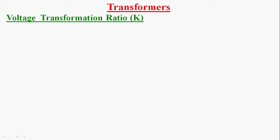Hi guys, now you are going to learn about the voltage transformation ratio K of the transformer. To study the voltage transformation ratio, let us consider the EMF equation: E1 is equal to 4.44 N1 BM into A into F, where BM is the maximum flux density, A is the cross-sectional area, F is the frequency, and N1 is the number of turns.